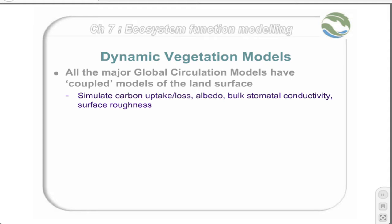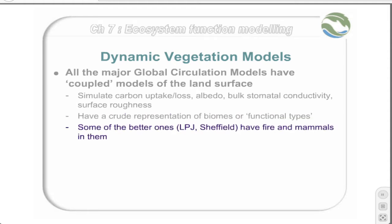Of course, since it's dealing with a GCM, which typically have very broad scales, the best that these models have is a very crude representation of several biomes or functional types. However, some of the better models, such as the LPJ model or the Sheffield DVGM, can also include such processes as fire and the interactions of mammals.